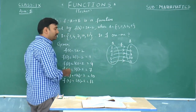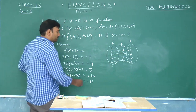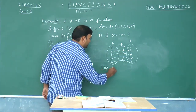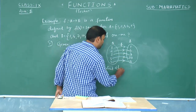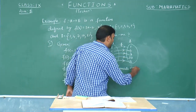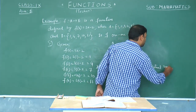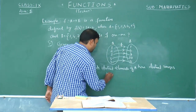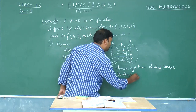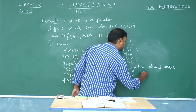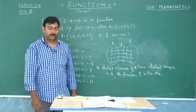From the arrow diagram we observe that distinct elements have got distinct images. Therefore, we can conclude that distinct elements of A have distinct images in B, and the function f is one-to-one. This is an example of a one-to-one function.